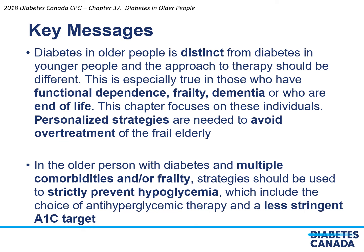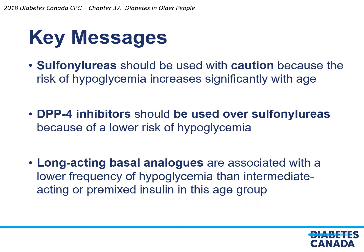The key messages from the chapter are as follows. First, diabetes in older people is distinct from diabetes in younger people and the approach to therapy should be different, especially in those with functional dependence, frailty, dementia, or who are at end of life. Personalized strategies are needed to avoid overtreatment of the frail elderly. Second, in the older person with diabetes and multiple comorbidities and/or frailty, strategies should be used to strictly prevent hypoglycemia through choice of antihyperglycemic therapy and a less stringent A1c target. Sulfonylureas should be used with caution due to increased hypoglycemia risk with age. DPP-4 inhibitors should be used over sulfonylureas. Long-acting basal analogs are associated with lower hypoglycemia frequency than intermediate-acting or premixed insulin.